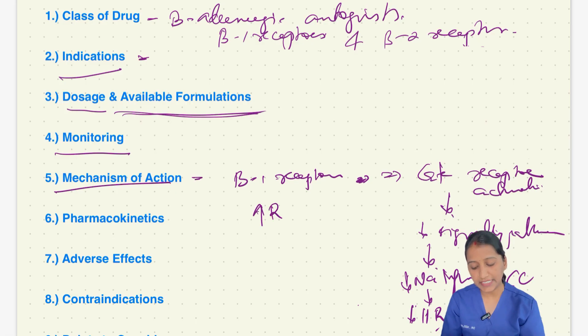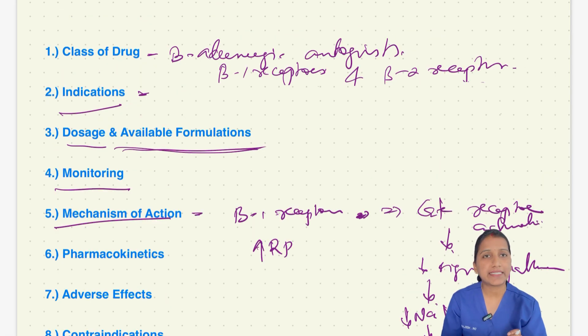Metaprolol increases the refractory period of the cardiac cells and reduces their excitability by prolonging the phase III of action potential. It decreases the contractility of the ventricular myocardium by inhibiting calcium influx. So, this is how metaprolol acts.